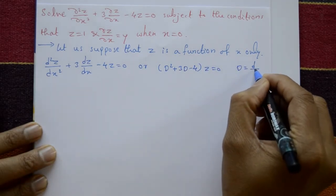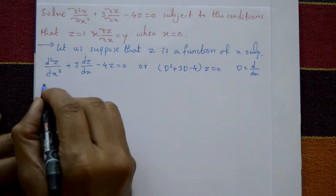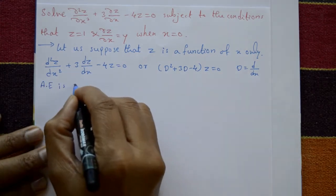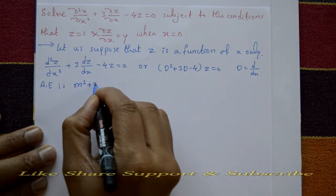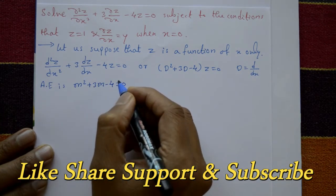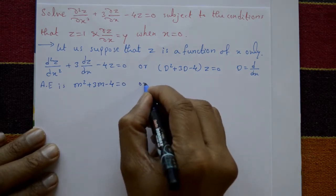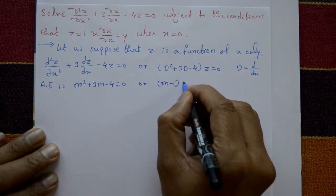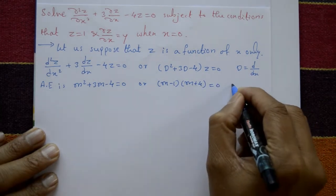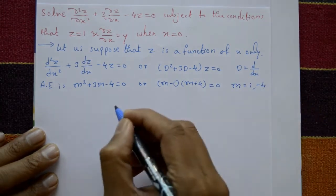Find the roots. The auxiliary equation is m² + 3m − 4 = 0, which factors as (m − 1)(m + 4) = 0, giving roots m = 1 and m = −4.